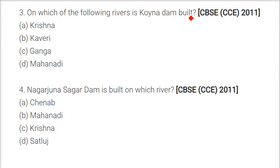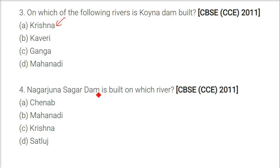On which of the following rivers is the Koina Dam built? The answer is the Krishna River — Koina Dam is built on the Krishna River.